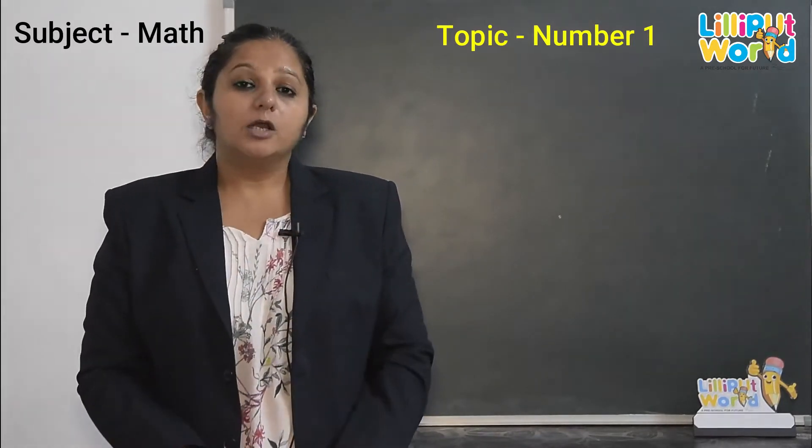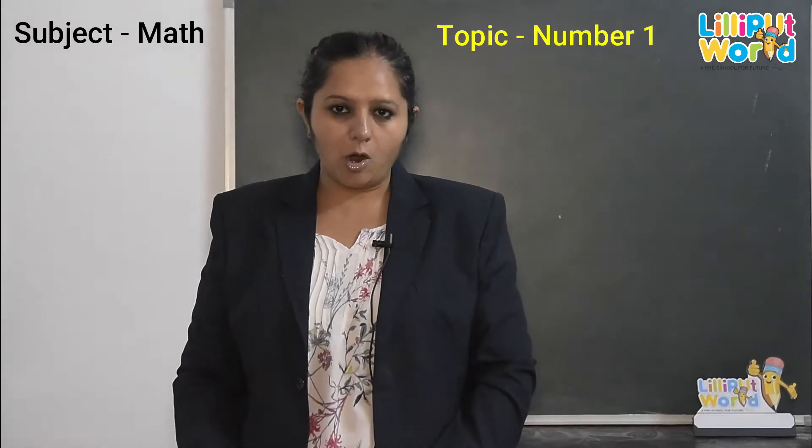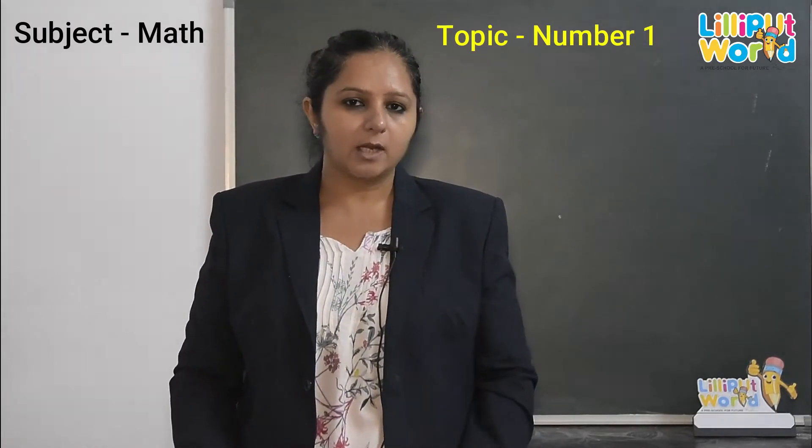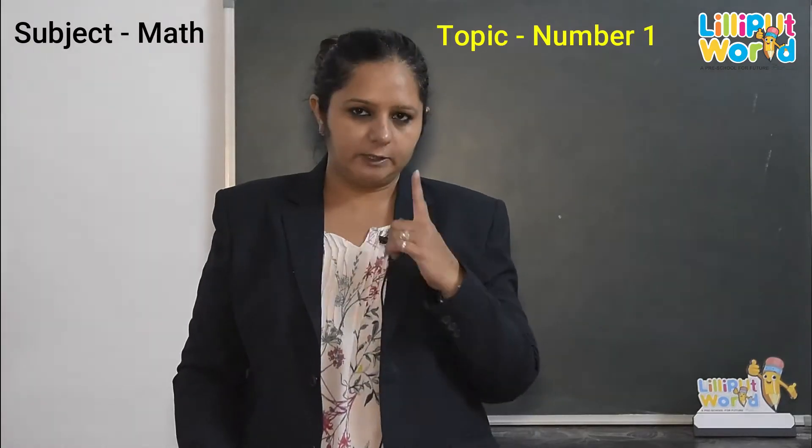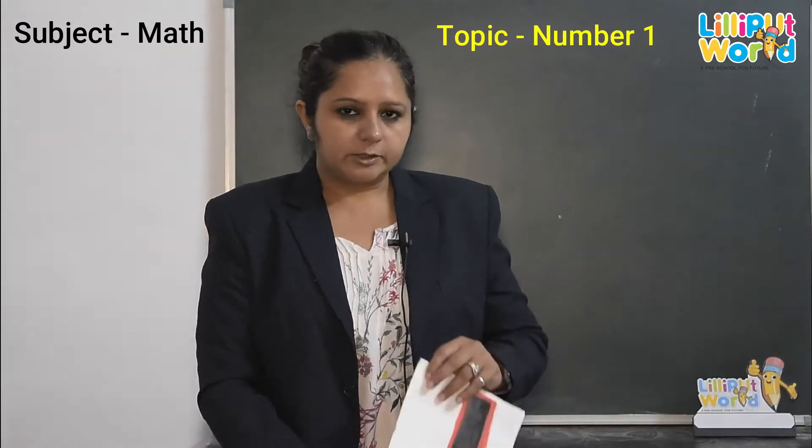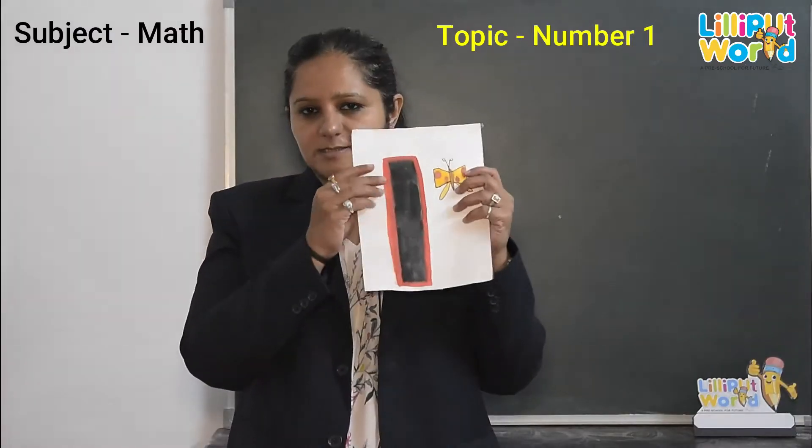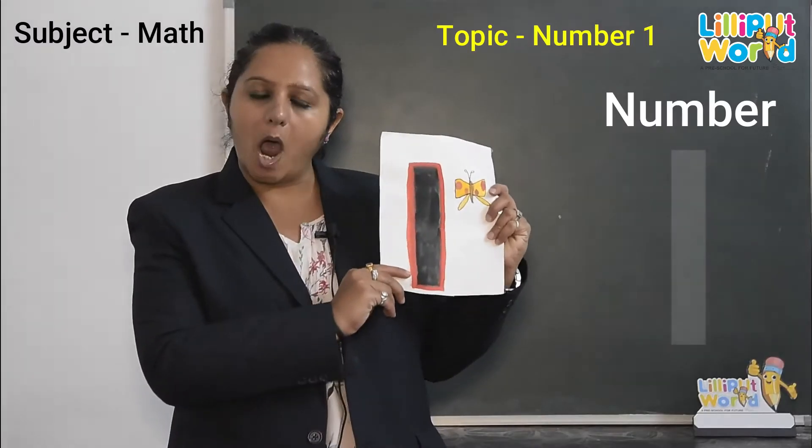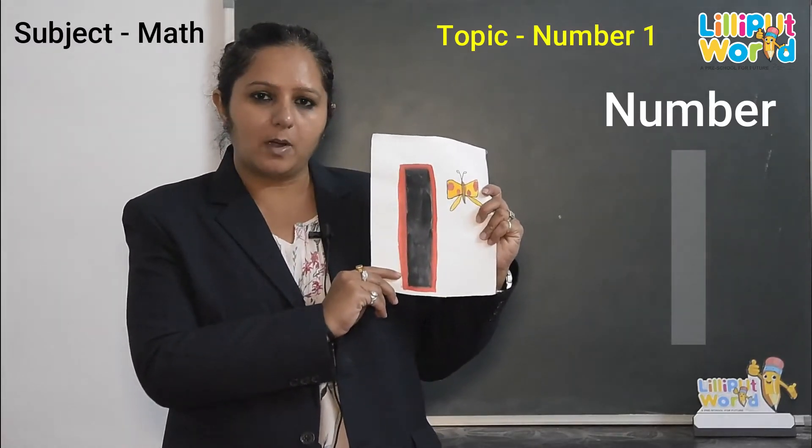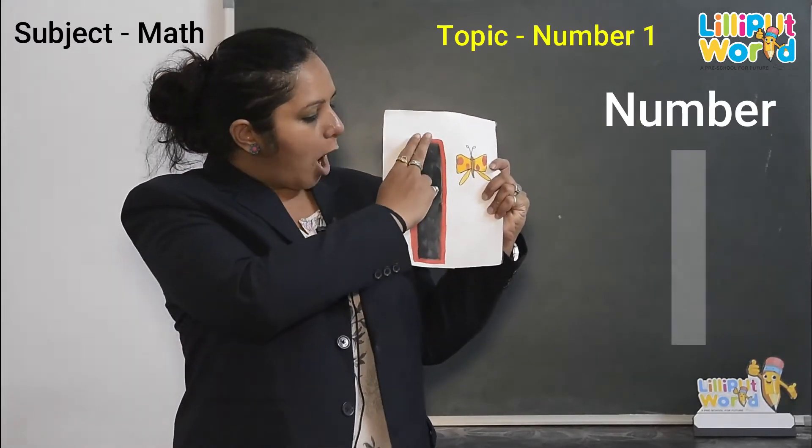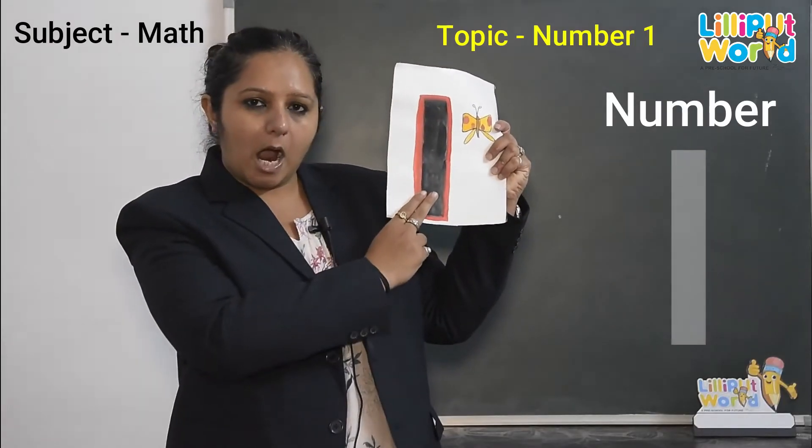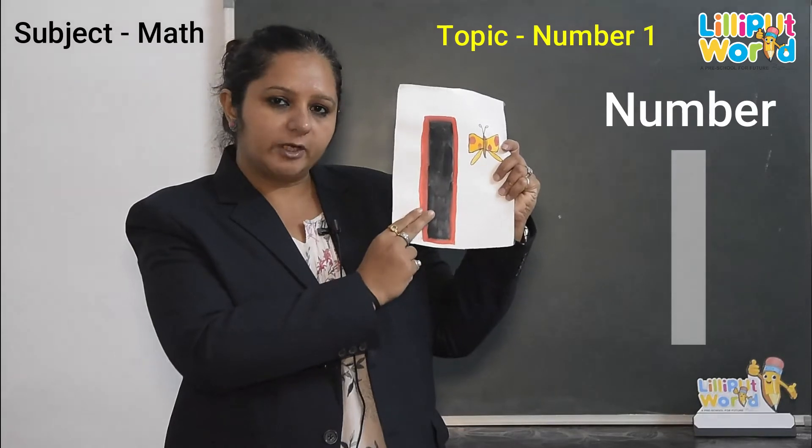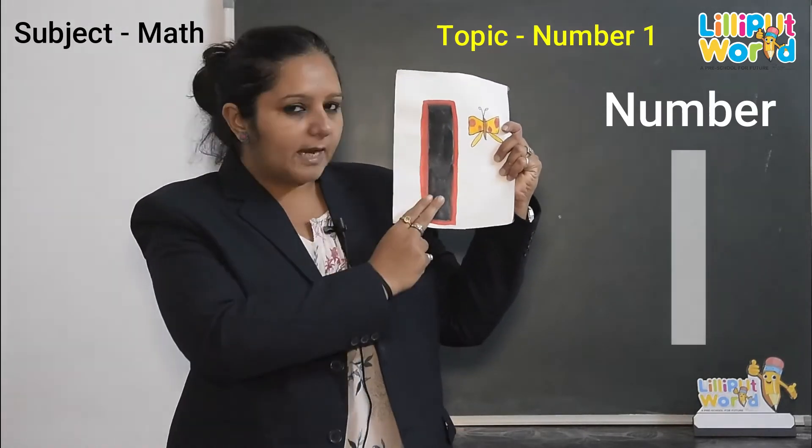Very good children. Do you know how the number looks like? Number 1 looks like? Do you don't know? I will tell you. This is number 1. What is this? Number 1. How we trace the number 1? We trace up to down. Up to down. How we do? Up to down.